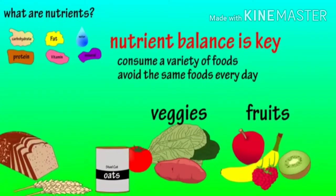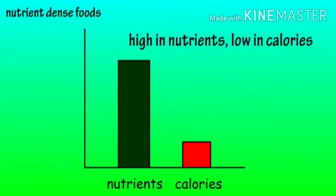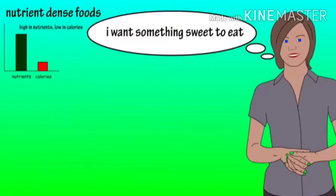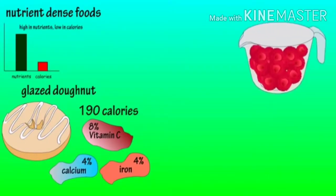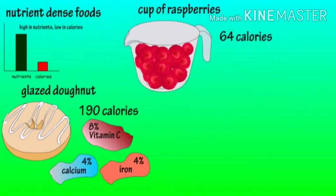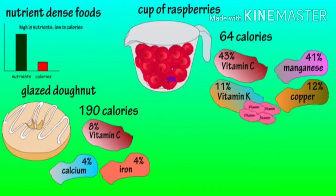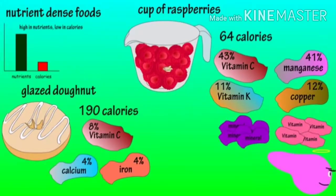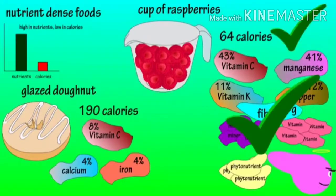Consuming fruits, veggies, and other nutrient-dense foods can help accomplish this. Nutrient-dense foods are often defined as foods that provide a lot of nutrients while not containing a high calorie count. For example, say you are craving something sweet. Option one is a glazed donut, which contains 190 calories and provides 8% of the RDI for vitamin C and a small amount of calcium and iron. Option two is a cup of raspberries, which provides 64 calories and is high in vitamin C, manganese, vitamin K, and copper. Raspberries also contain smaller amounts of many other vitamins and minerals, and they are loaded with antioxidants, phytonutrients, and 8 grams of fiber, which helps with digestion. Far less calories and many more nutrients — which equals a much healthier option.